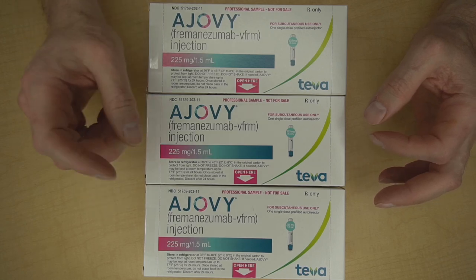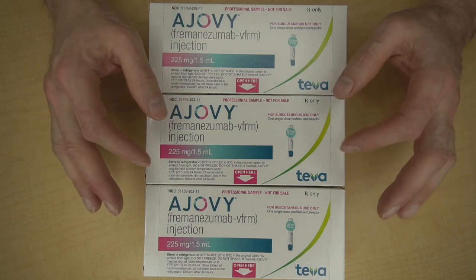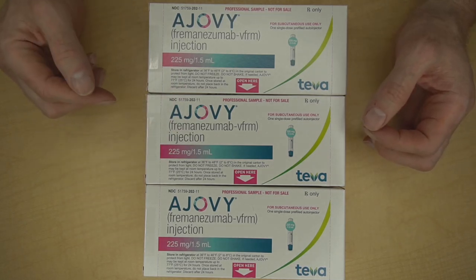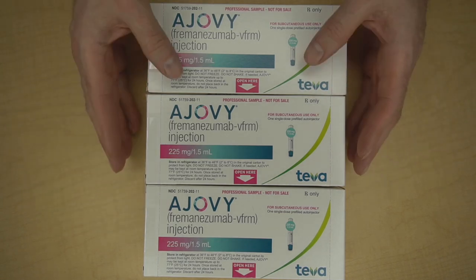Step number one is to get ready. And whether you've chosen to use Ajovi quarterly or monthly, the steps for an individual injection are similar. To do the quarterly treatment, just do three separate injections, one after another.